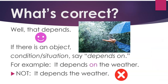So, what's correct? Well, that depends. If there is an object, condition, or situation, say 'depends on.' For example, 'it depends on the weather.' Not 'it depends the weather.'